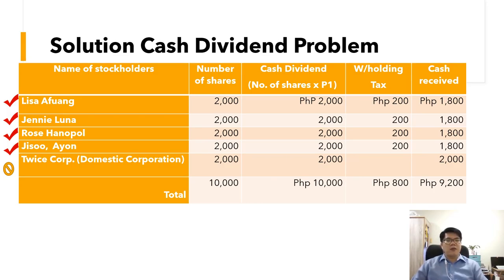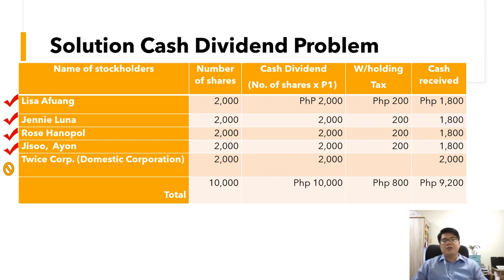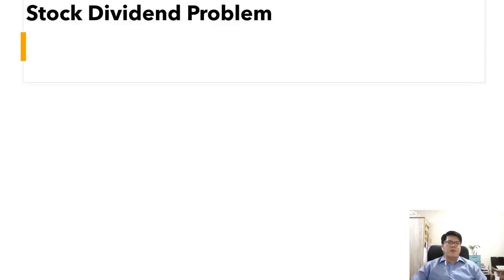In the case of Twice Corporation, since it is also a domestic corporation, the tax code states that if a domestic corporation receives a cash dividend from a domestic corporation, the dividend income is exempt — so no 10% withholding tax is deducted. Consequently, Twice Corporation receives the full 2,000. Blink Corporation's obligation is to remit the withholding tax of 200 per individual stockholder — totaling 800 — to the BIR.